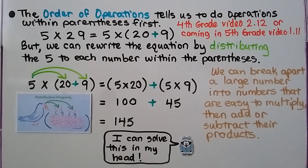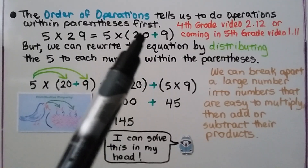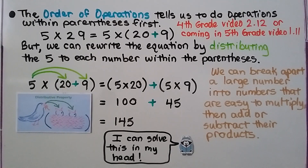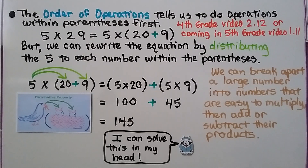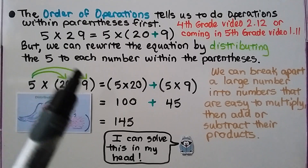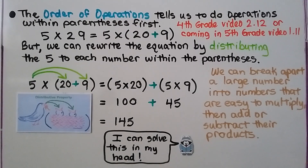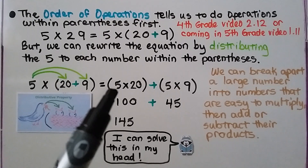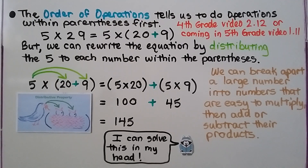Back in fourth grade math, chapter 2, video 2.12, which is linked in the description, we learned about the order of operations — which tells us to do operations within parentheses first. So for 5 times 29, we would do 20 plus 9 first. But we can rewrite the equation by distributing the 5 to each number within the parentheses: 5 times 20 plus 5 times 9 equals 100 plus 45, which equals 145. So we can break apart a large number like 29 into numbers that are easy to multiply, like 5 times 20, then add or subtract their products — and we can solve it in our head.